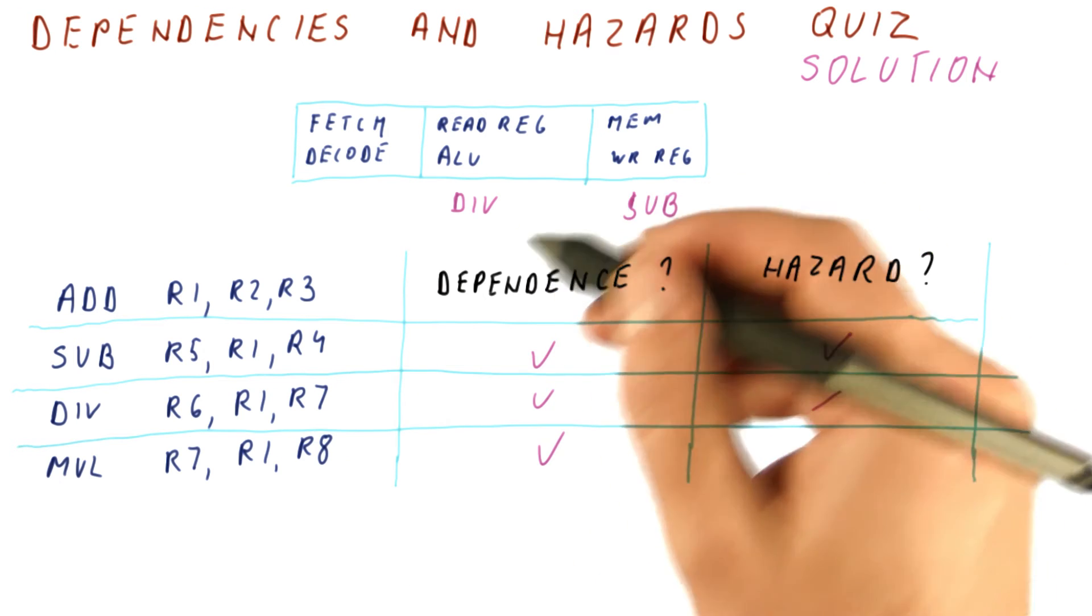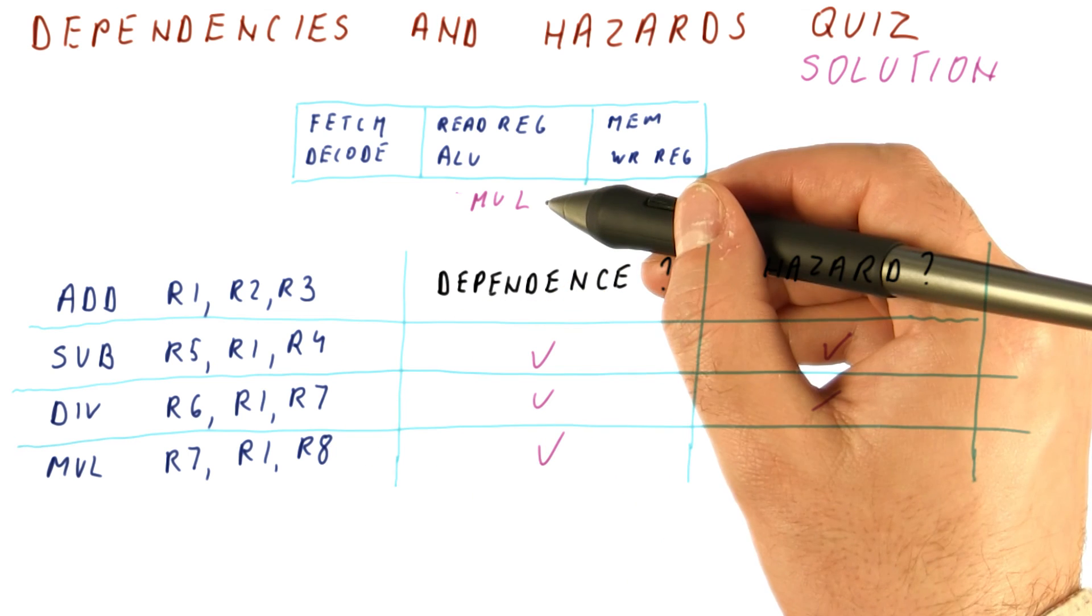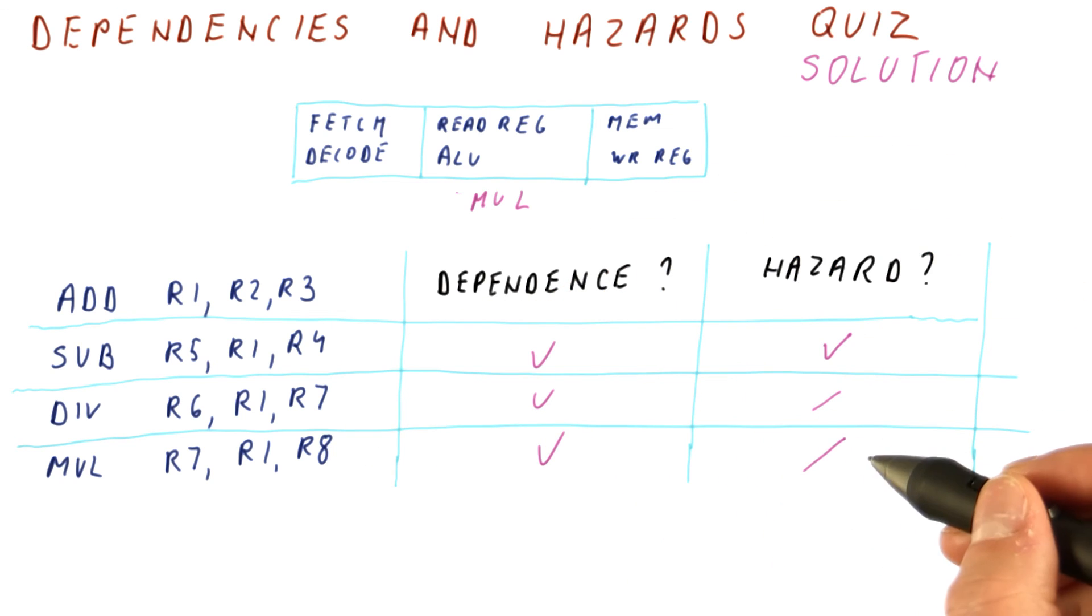And of course, the multiply reads the same register one cycle after the divide, so it also has no hazard. So here is a hazard.